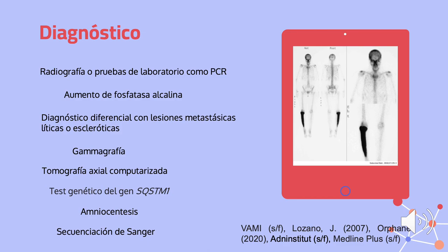El diagnóstico se realiza por radiografía simple; la imagen suele ser característica en la mayoría de los casos, aunque hay ocasiones en las que hay que realizar el diagnóstico diferencial con lesiones metastásicas, líticas o escleróticas. También la gamografía es útil para conocer la extensión del proceso y para el estudio de probables complicaciones neurológicas por afectación de huesos de la base del cráneo, columna vertebral o huesos largos, y esta es más sensible que la radiografía simple para identificar los huesos afectados. La tomografía axial computarizada se utiliza para diagnosticar estenosis del canal vertebral, afectación craneal o complicaciones neurológicas. Los pacientes sin tratamiento pueden presentar elevación de los valores plasmáticos de fosfatasa alcalina; sin embargo, puede estar normal en afectación de un solo hueso o de huesos pequeños.